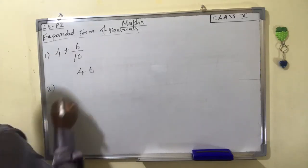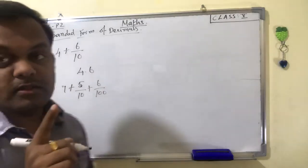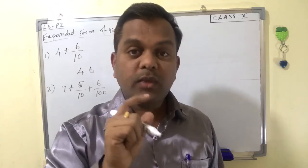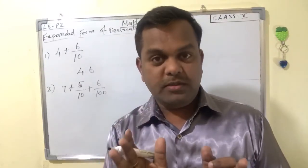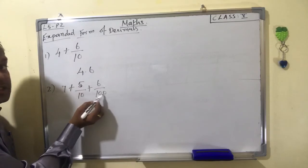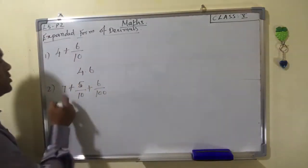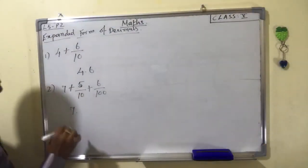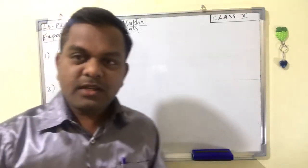Next: 7 plus 5/10 plus 6/100. As explained earlier, decimals are fractions with denominators 10, 100, 1000 and so on. The whole number is 7. The fraction 5/10 goes in the tenths place — first place after the decimal point — so write 5. Then 6/100 goes in the hundredths place — write 6. The answer is 7.56.